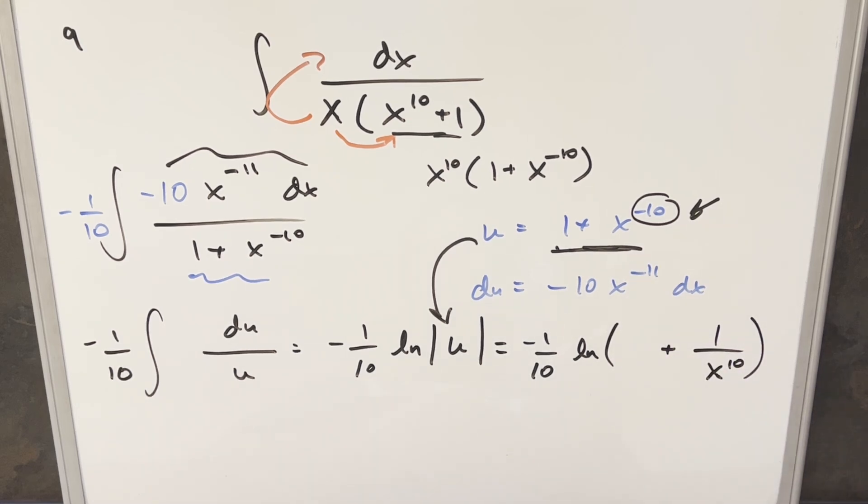So what I'm going to do is let's get a common denominator. We'll write it as x to the 10 over x to the 10 for that 1 right there. Then putting this together with the common denominator, we have minus 1 over 10. Now we'll have this as natural log x to the 10 plus 1 over x to the 10. But then let's break this up with log properties, turning it into subtraction.